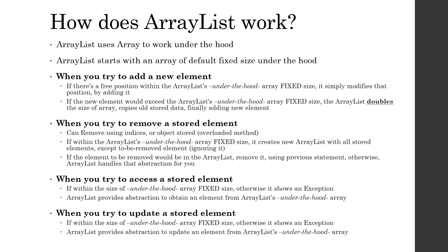If updating by key, the ArrayList searches the array until it finds the element, otherwise it signals it couldn't find it — whether via a boolean or null value, depending on the implementation — and then updates the element at that index. That's how an ArrayList works overall.